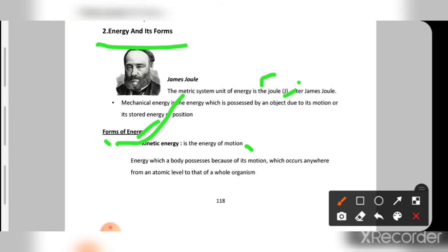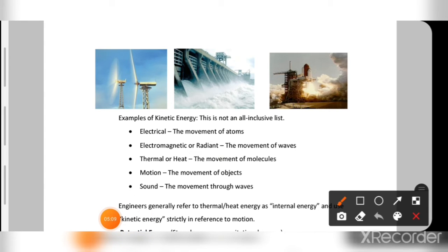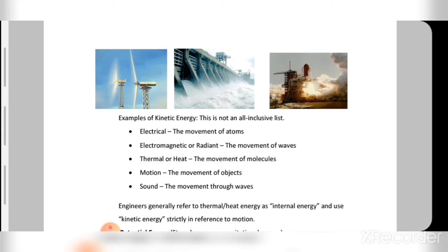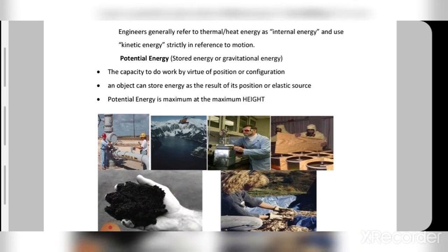Kinetic energy is the energy of motion — energy which a body possesses because of its motion, occurring anywhere from the atomic level to whole organisms. Examples of kinetic energy include: electrical (movement of atoms), electromagnetic or radiation (movement of waves), thermal or heat (movement of molecules), motion (movement of objects), and sound (movement through waves).